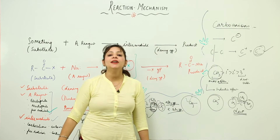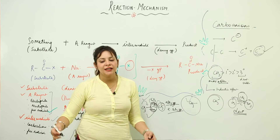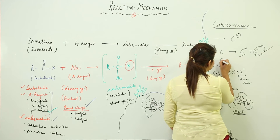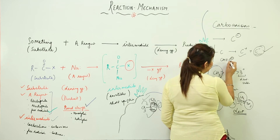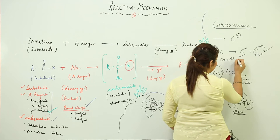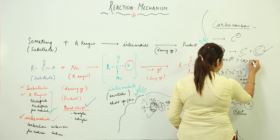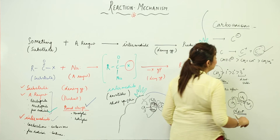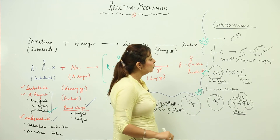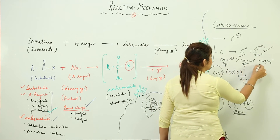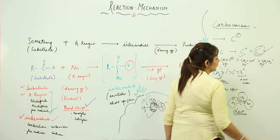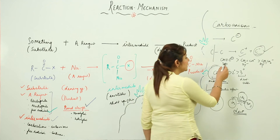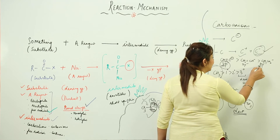Now we can have carbanions from alkynes and from alkenes. Just look at their stability. The carbanion from the alkyne is more stable than the one from the alkene, and the one from the alkane is the least stable. In alkynes, the carbon is sp hybridized; in alkenes, it is sp2 hybridized; and in alkanes, it is sp3 hybridized. If we compare the s-character in them, the alkyne carbon has maximum s-character and the alkane carbon has the least s-character.